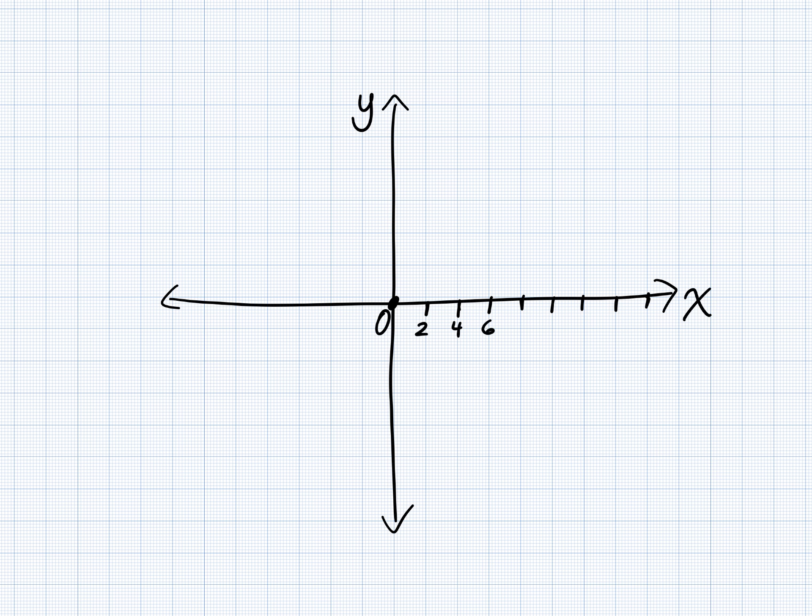So I'm going to label this 2, 4, 6, 8, 10, which means that halfway between 0 and 2 would be 1, correct? Yeah.